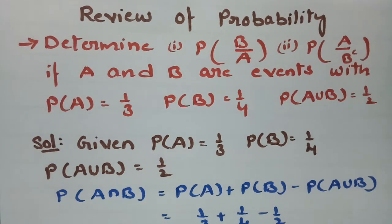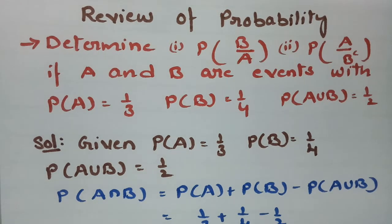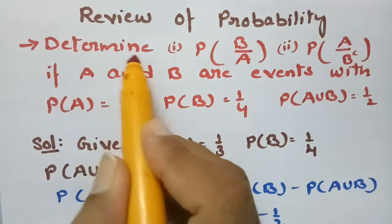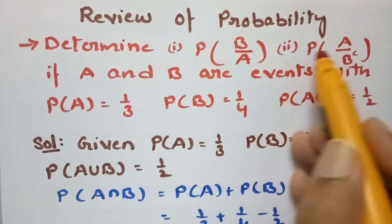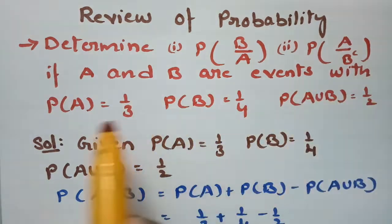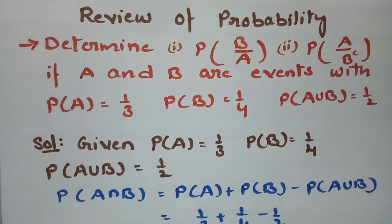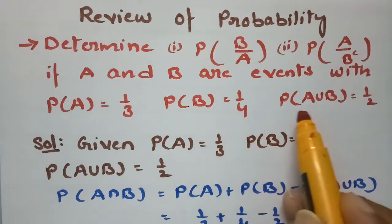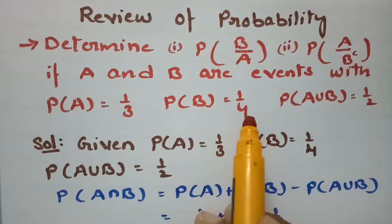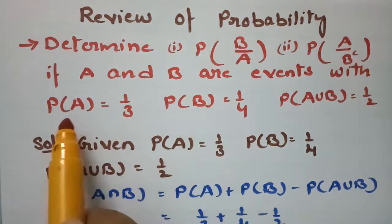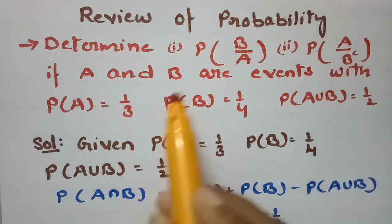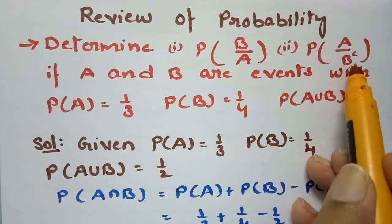Today's problem is from a review of probability. Using the multiplication theorem or conditional probability, we are going to solve this. We have to determine the probability of B given A, and the probability of A given B complement. A and B are events with probability of A equal to 1/3, probability of B equal to 1/4, and probability of A union B equal to 1/2.